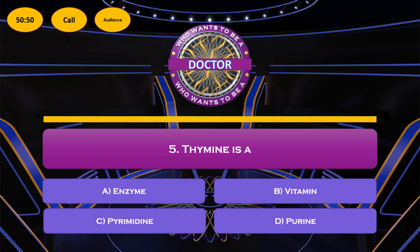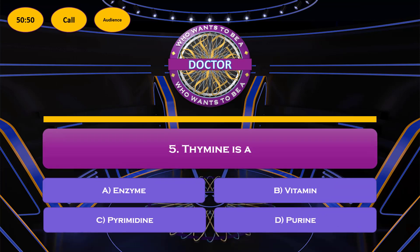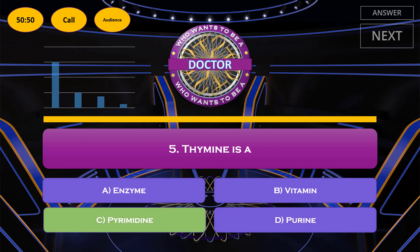Moving on: thymine is — option A: an enzyme; option B: a vitamin; option C: a pyrimidine; option D: a purine. The correct answer is option C, pyrimidine.